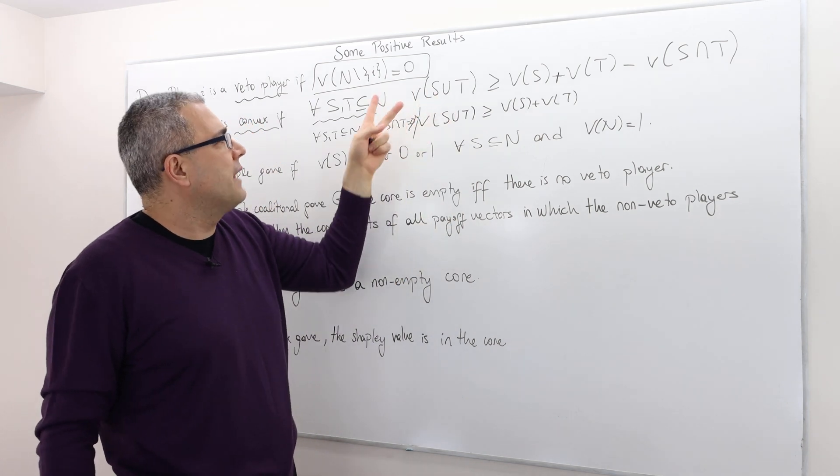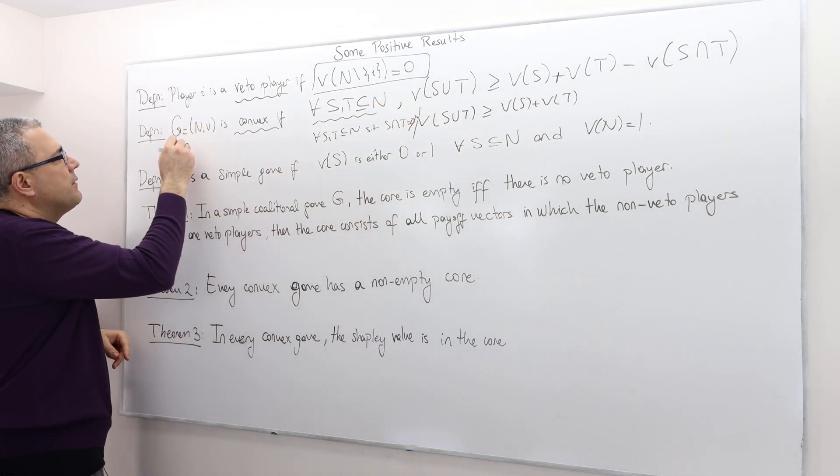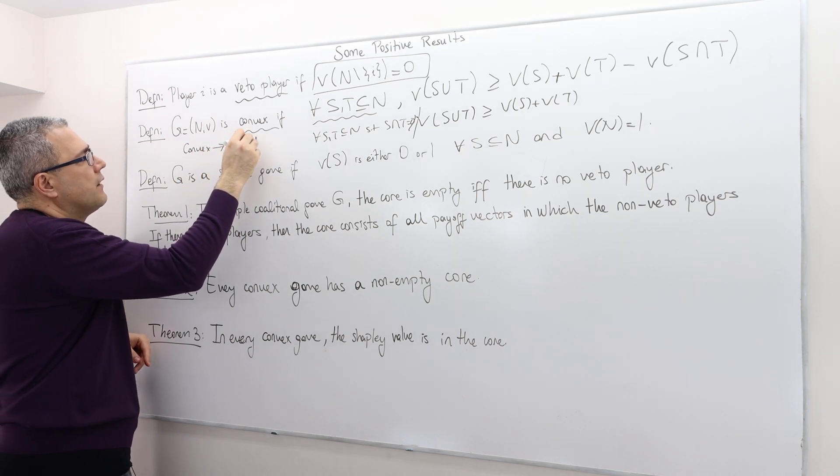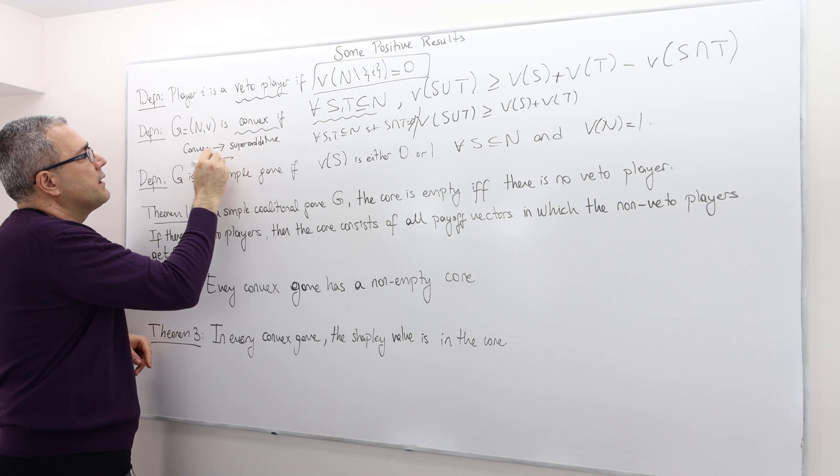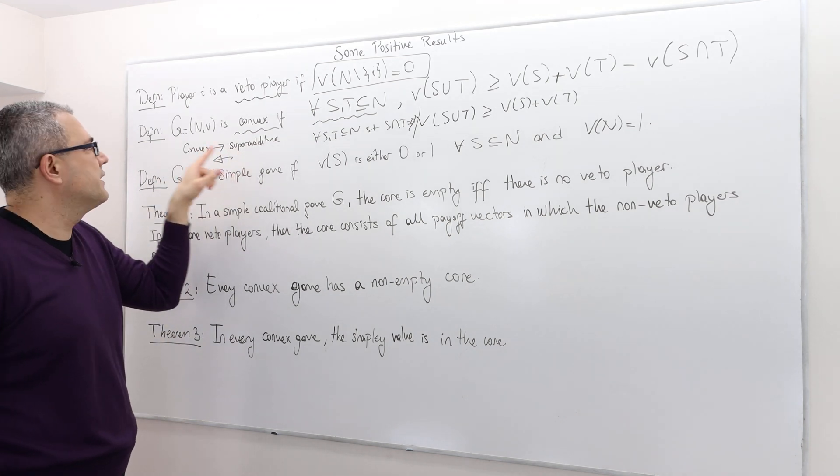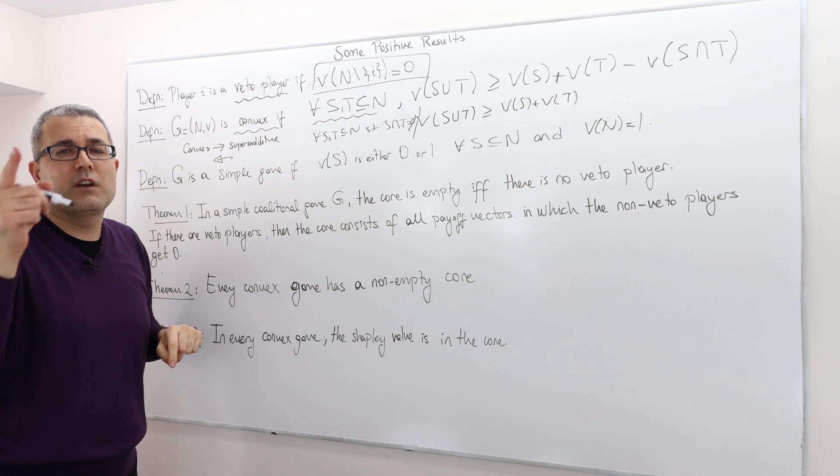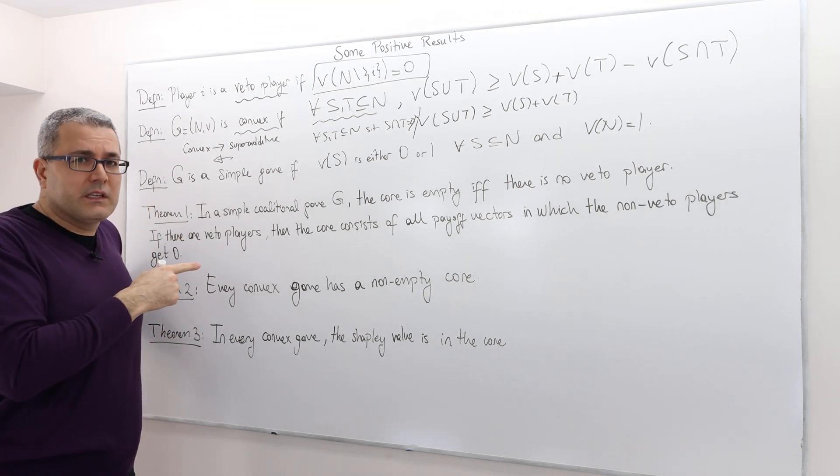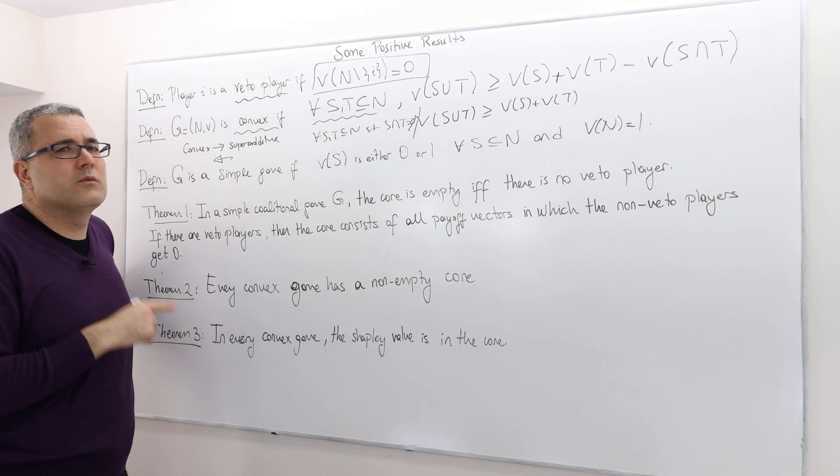So that means if a game is convex, well, then it has to be superadditive. But the converse is not true. I mean, there can be games which are superadditive but not convex. For example, the ice cream example, it is superadditive, right? But it's not convex. Why?